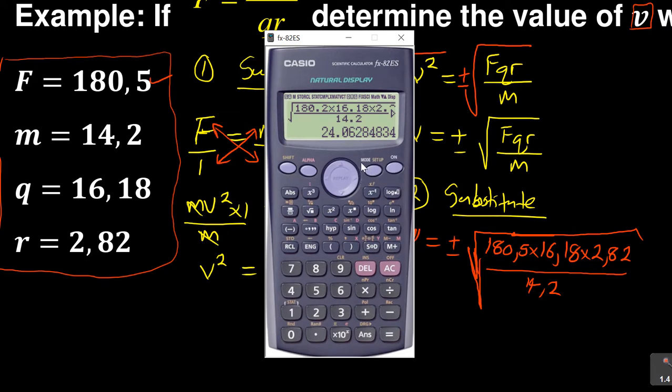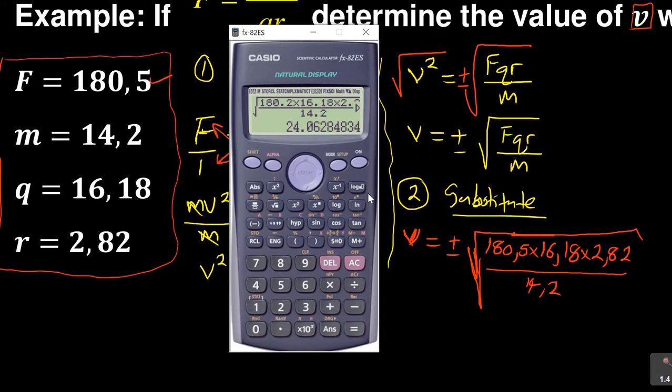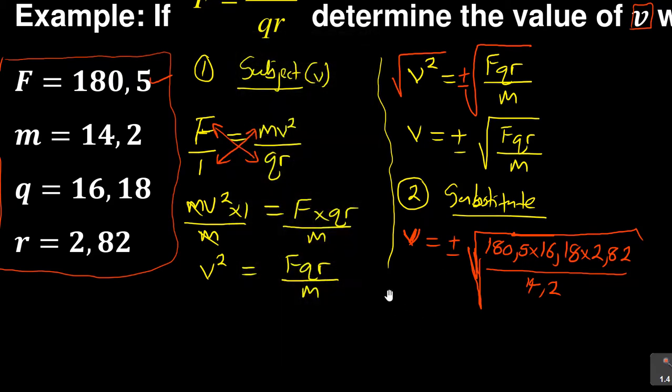When you've done that, there is the answer. You need to leave your answer in three decimal places if they did not specify. The calculator will do your rounding off - it will do all the work for you. What you need to do is know how to set it up. You say shift, set up, number six for fixed, then you press three for three decimal places. The final answer is 24.063, so v = 24.063. Therefore this becomes the final answer for v.